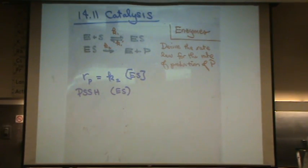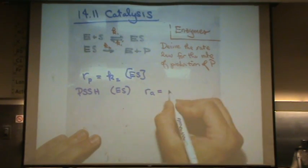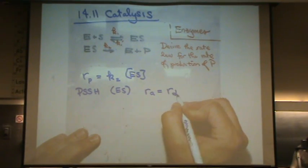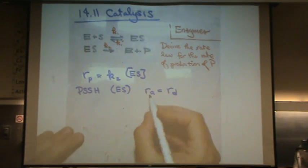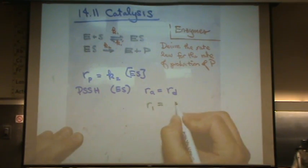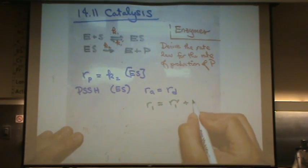Let's do that. Remember that means rate of appearance, wherever it appears in the products equals rate of disappearance from the reactants. So where does it appear? Rate one, and that equals rate one reverse, right? That's where it disappears, plus rate two.